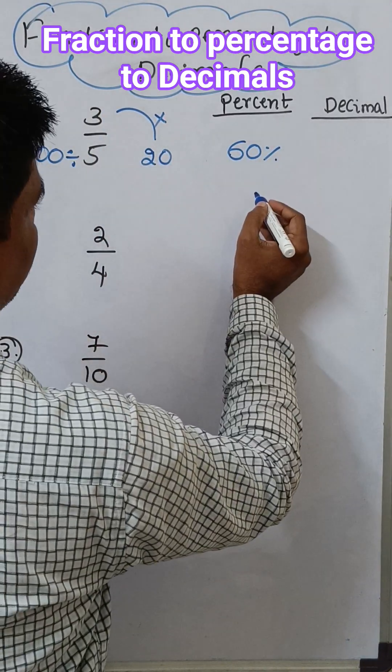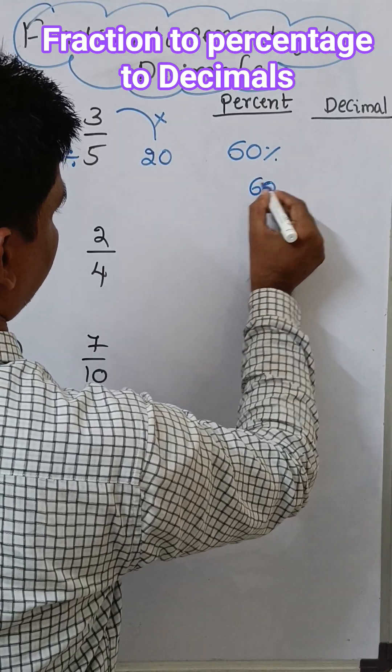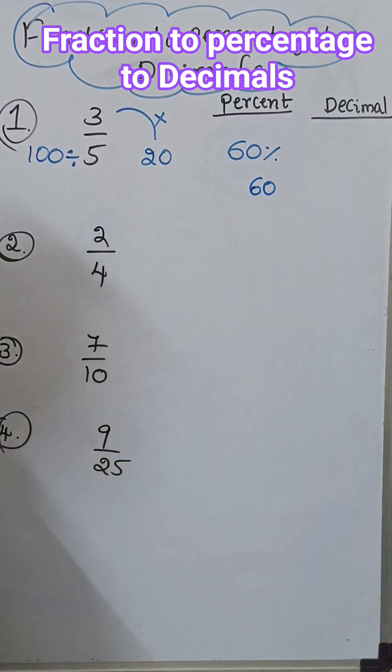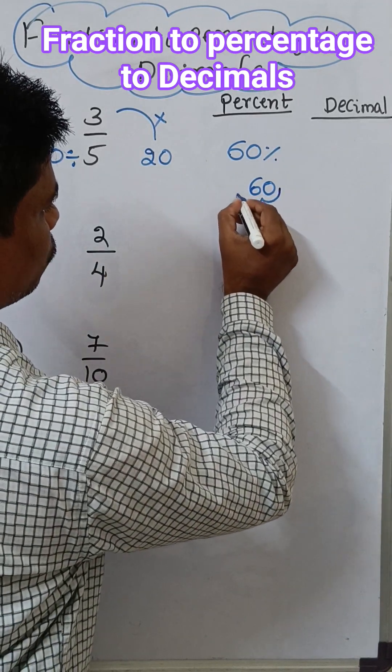So this percentage will be converted. How to convert? So we know that 60 percent, here the percent means divide by 100. So we have to move the two places.